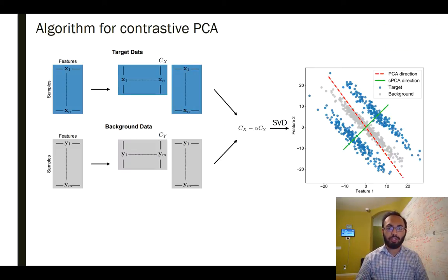The underlying algorithm for contrastive PCA is very intuitive. We start with a target data set that consists of n samples with d features. We take this data matrix and compute the covariance matrix associated with it. We do the same thing with the background data. We go ahead and compute the covariance matrix of the background data. Then we take the weighted difference of these covariance matrices.